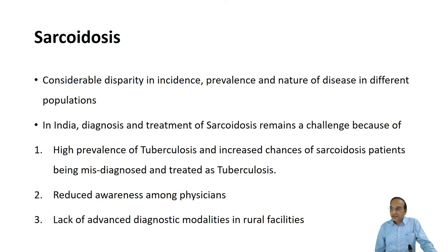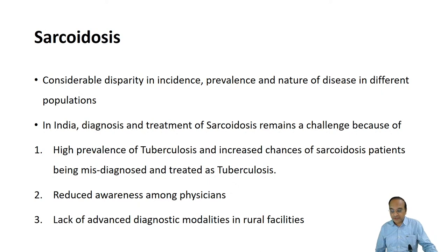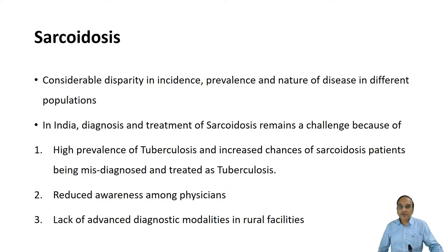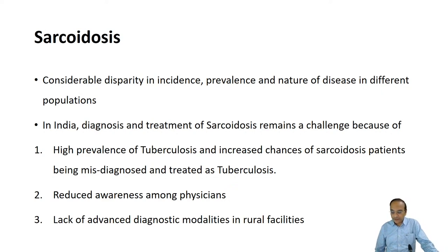As far as prevalence and incidence are concerned, there is considerable disparity because different populations have different incidence and prevalence. In India, treatment and diagnosis both remain a challenge because of the high prevalence of TB and increased chances of sarcoidosis patients being misdiagnosed and treated with tuberculosis, thereby losing precious time. There is reduced awareness among physicians, although the situation is much better compared to 10–15 years ago. In rural and semi-rural areas, sarcoidosis remains missed, and there is a lack of advanced diagnostic modalities.